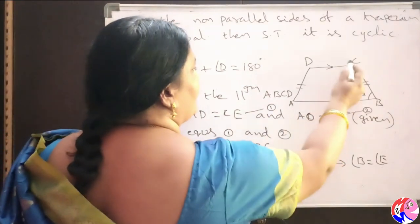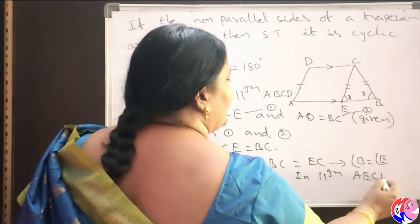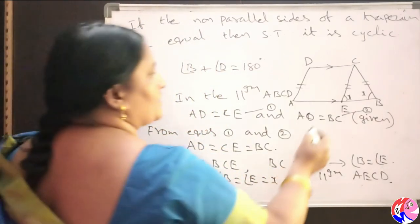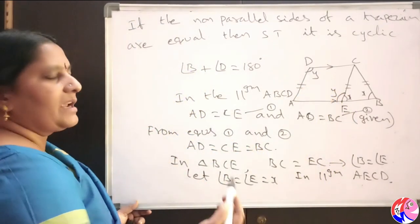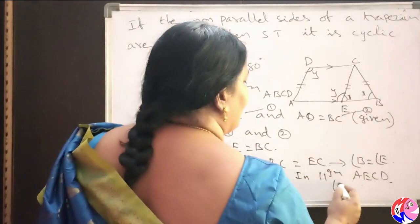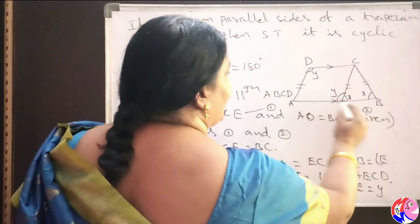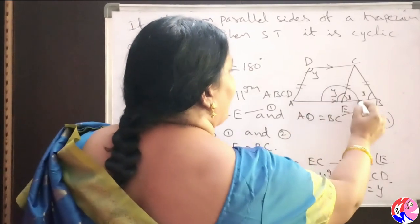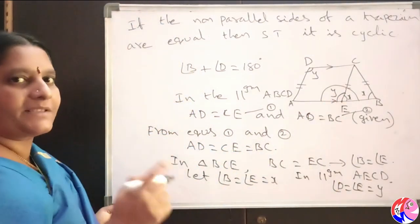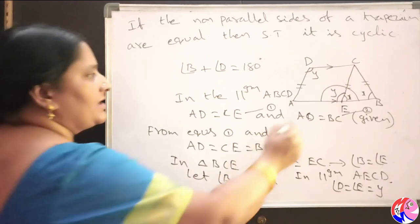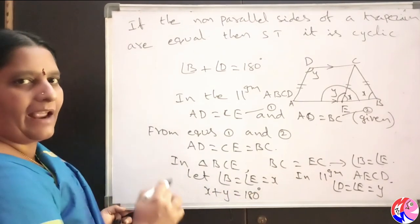Now come to the parallelogram AECD. In parallelogram AECD, opposite angles are equal. Assume the angle at A is Y; then the angle at vertex D is also equal to Y because opposite angles are equal. So angle D equals Y. In this diagram, AB is a straight line, and X and Y are angles on the same straight line. We know that angles on the same straight line sum to 180 degrees. So X plus Y equals 180 degrees.